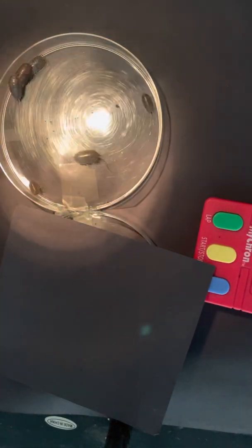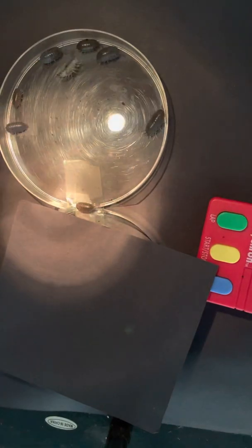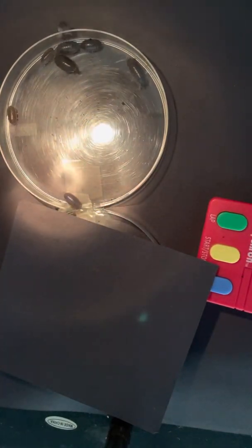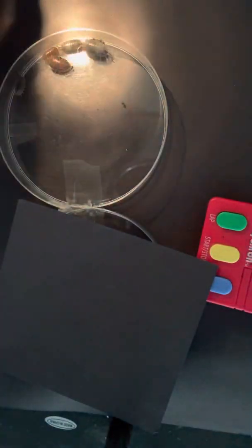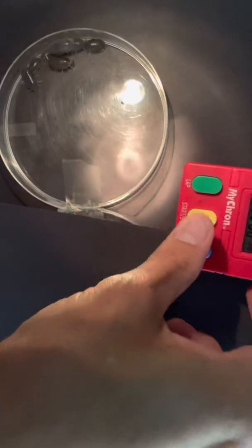So here we are looking at the environment of the isopods, those are the small crustaceans. We have a behavior chamber set up and the time has started.